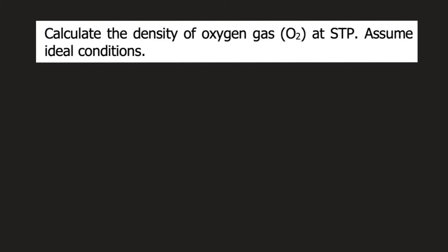Calculate the density of oxygen gas at STP. Assume ideal conditions. The formula for density of an ideal gas is equal to MP over RT.